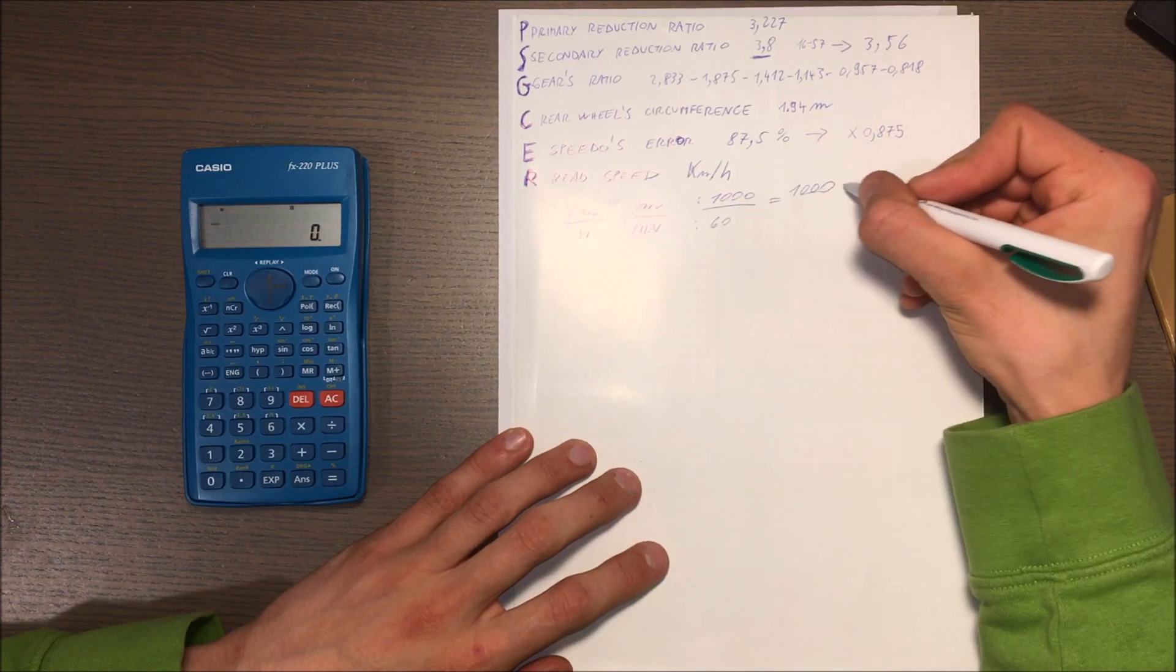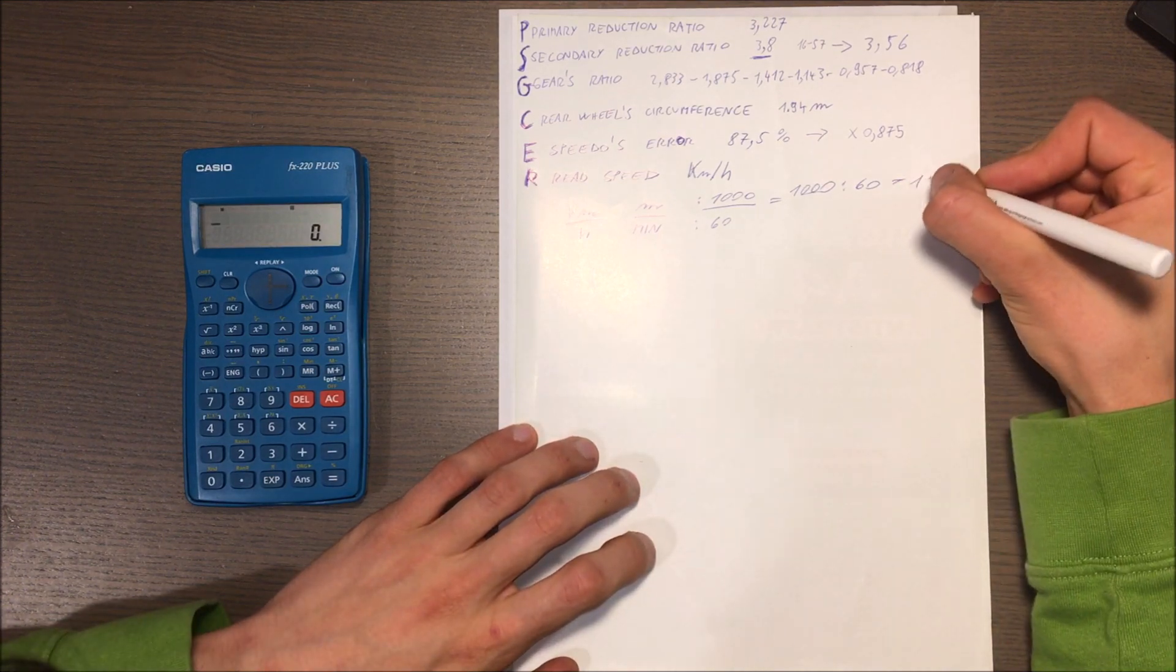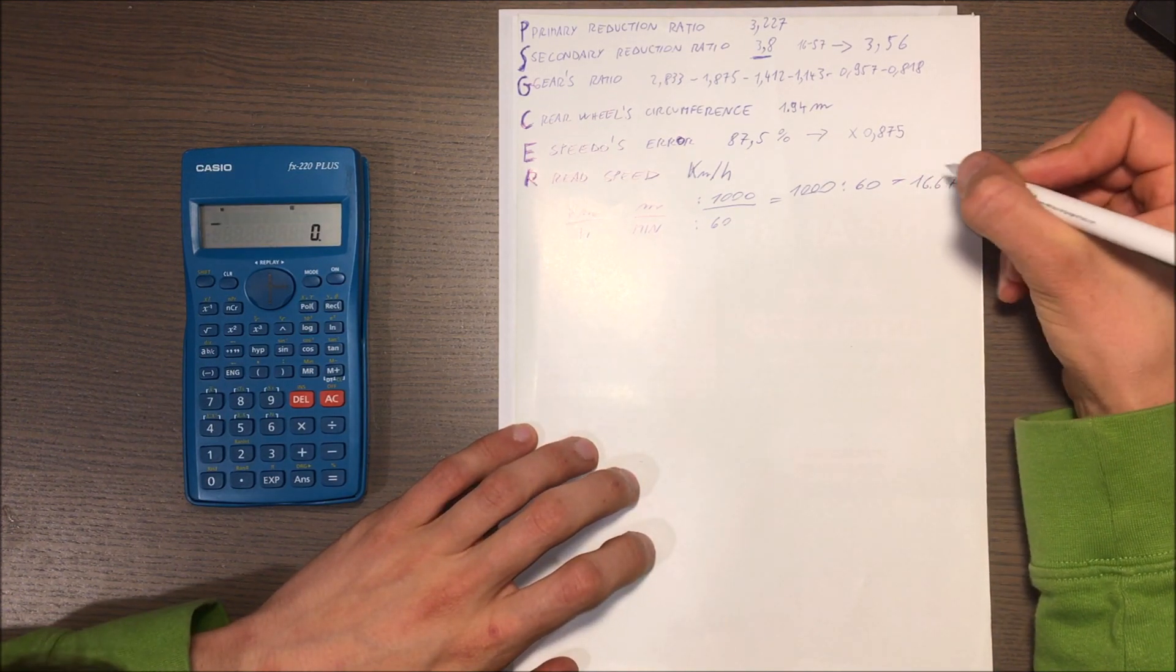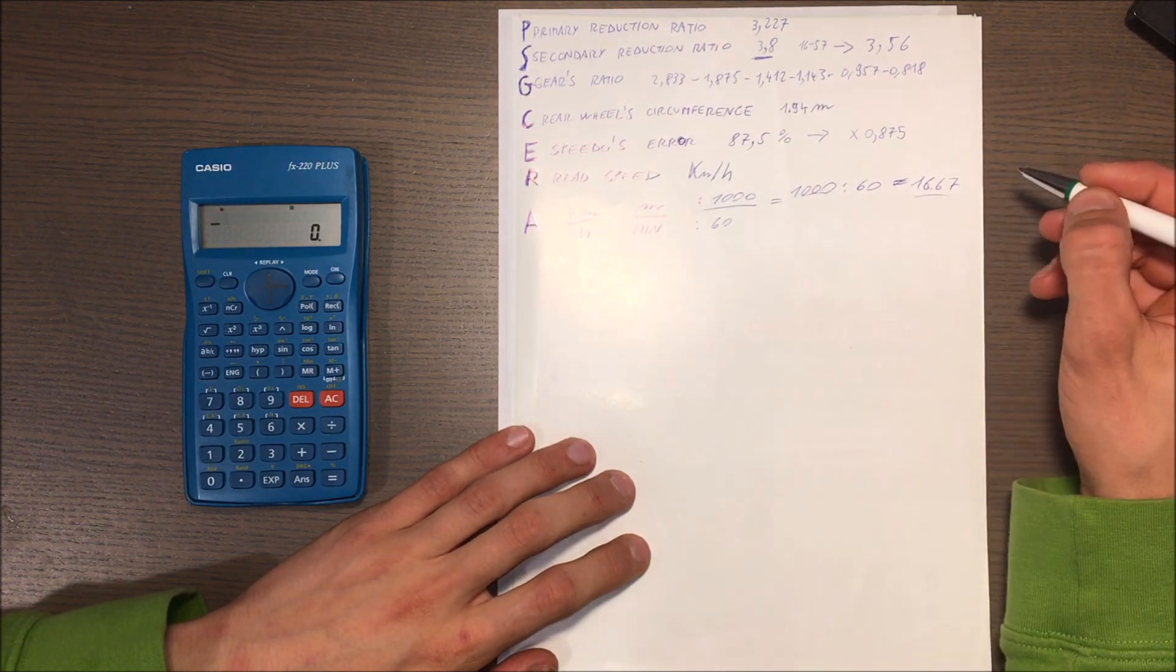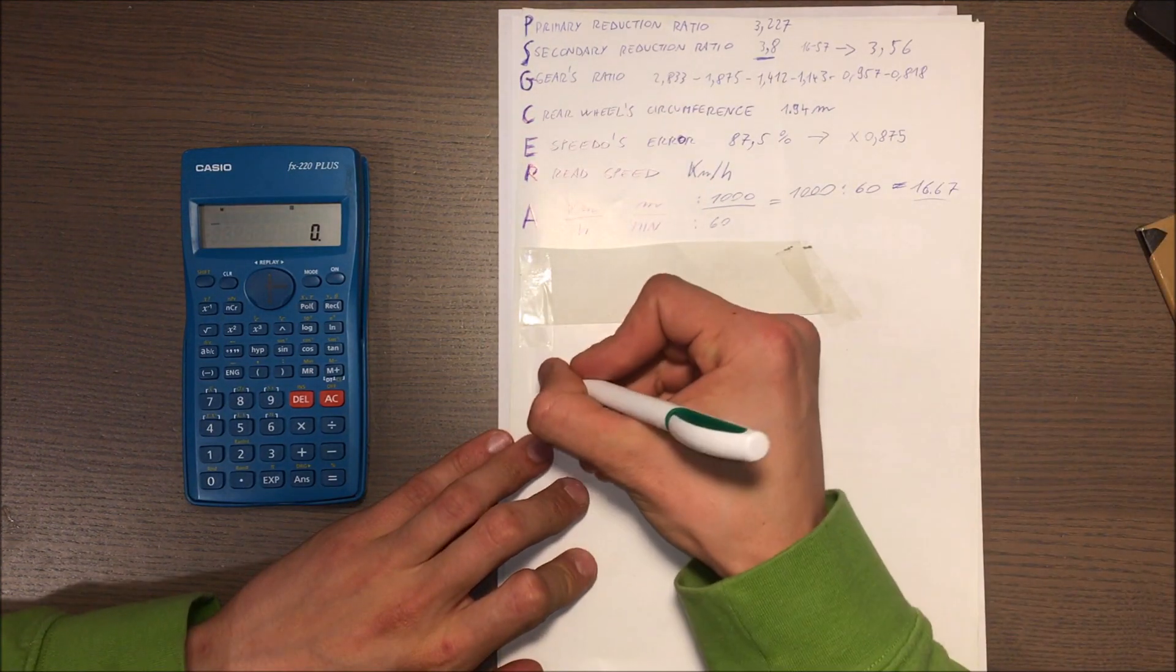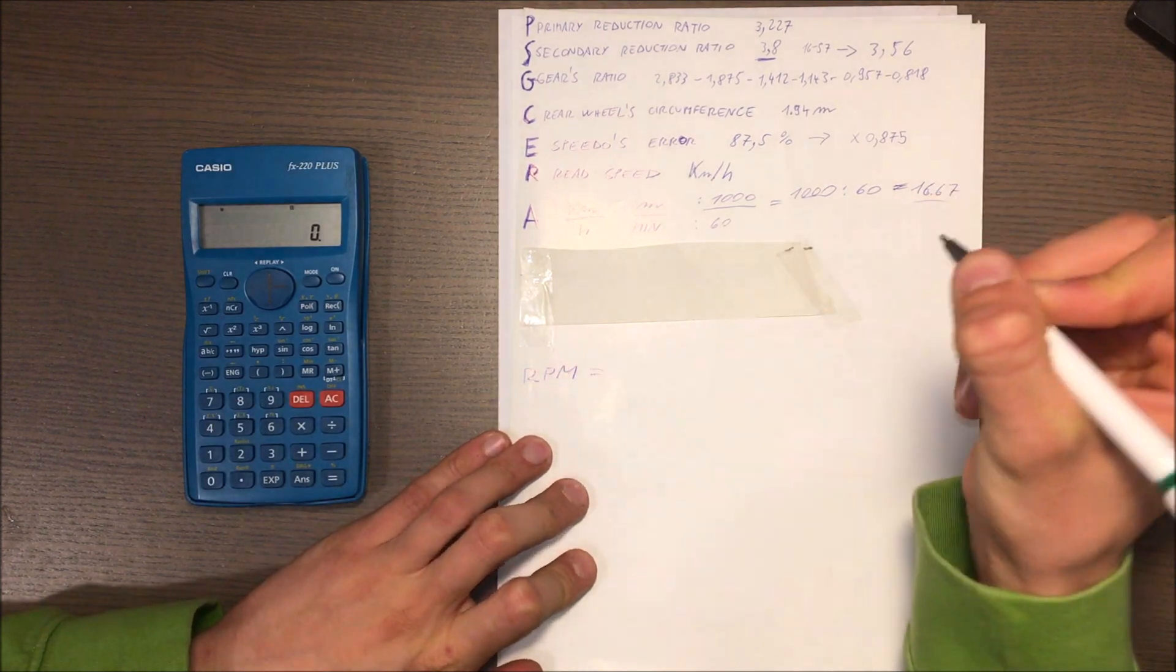So now I'll just do 1000 divided by 60 and it is 16.67. A is 16.67.